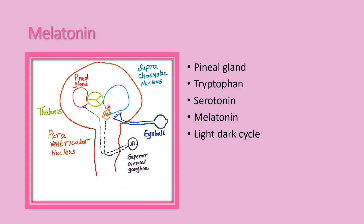The suprachiasmatic nucleus regulates the circadian rhythm. From the suprachiasmatic nucleus, through the paraventricular nucleus, the signal reaches the superior cervical ganglion. From the superior cervical ganglion, sympathetic nerve fibers reach the pineal gland. During the dark period, it produces a greater amount of melatonin secretion.